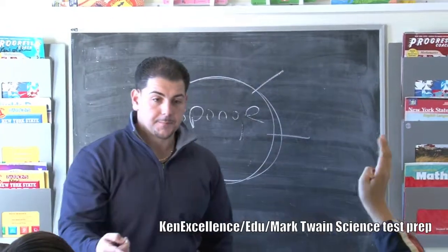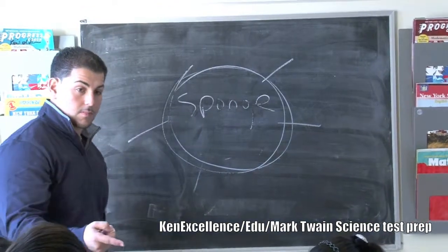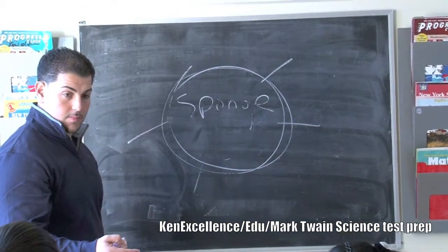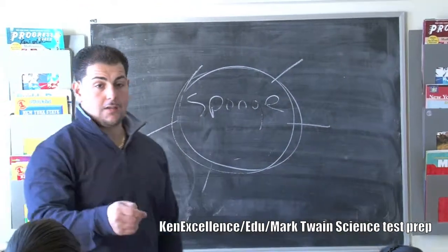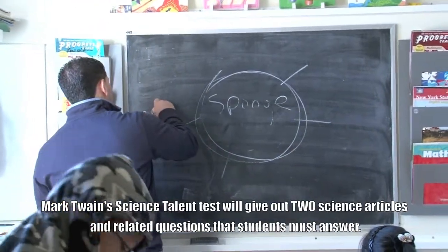I don't know about a sponge. What do you got? When you cut them in half, those two halves can make all mold. Okay, so if you cut it in half, what does it have the ability to do? Regenerate. Regenerate. It has the ability to regenerate.